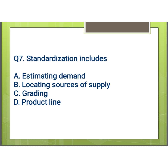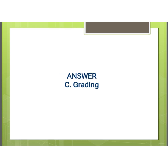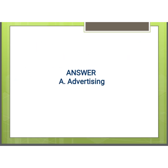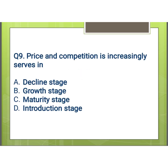Our next question involves options including locating sources of supply, grading, and product line — and our answer is C, that is grading. Our next question is: which is a mass communication of information intended to persuade buyers to maximize profits? Options are: A) advertising, B) sales promotion, C) personal selling, and D) public relations. And our answer is A, that is advertising.